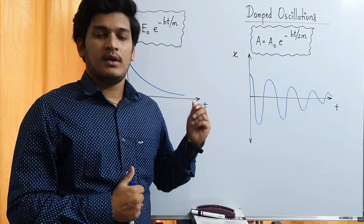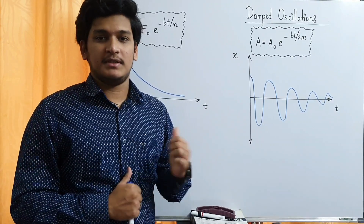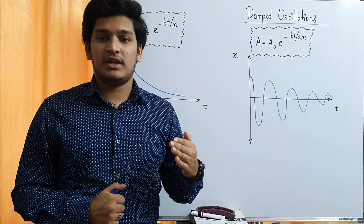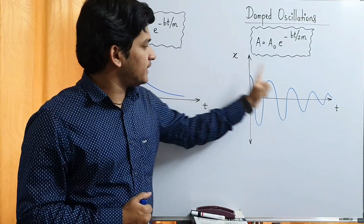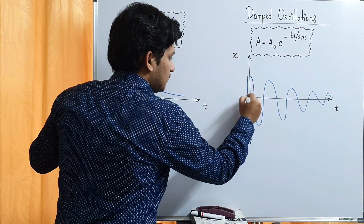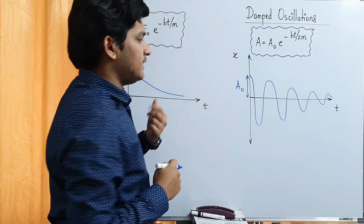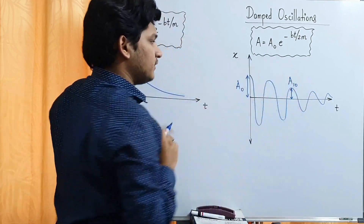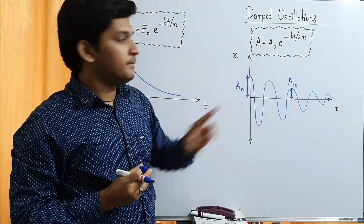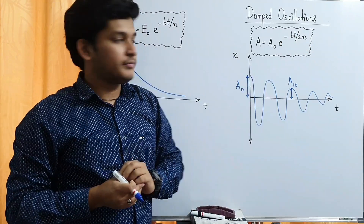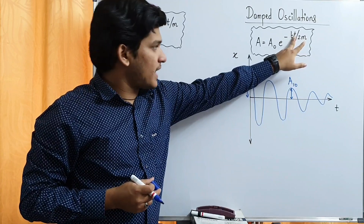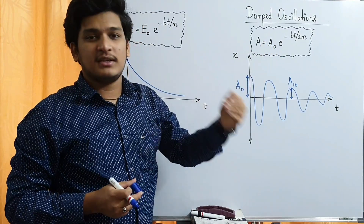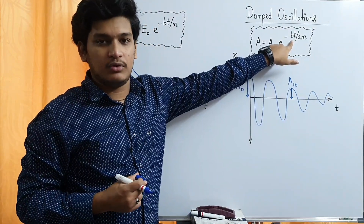Damped oscillations ka thoda sa extra part which is not mentioned in the textbook but definitely entrance exams mein aata hai. We have plotted two graphs. First graph is displacement versus time. Damped oscillations mein amplitude goes on decreasing, so displacement versus time graph aisa dikhega. Initially amplitude itna tha, usko hum log A0 bote hai. Let's say after 10 seconds amplitude itna ho gaya. To agar mujhe yeh amplitude find karna hai, I will use this relation: A = A₀ · e^(-bt/2m), where t is time and m is mass. So this is the relation between initial amplitude and amplitude after some time.